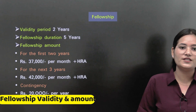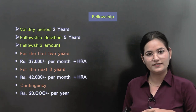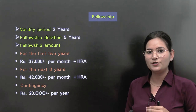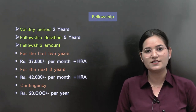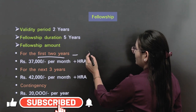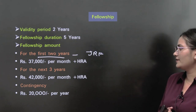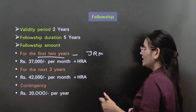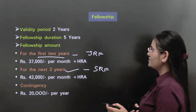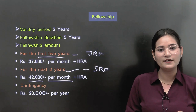Talking about fellowship: the validity period is 2 years. If you qualified the exam in 2023, you can activate your certificate any time up to 2025. The fellowship duration is 5 years if you are doing PhD from any institute or university in India. For the first 2 years, you are a JRF — Junior Research Fellow — receiving ₹37,000 per month plus HRA. For the next 3 years, you are promoted to SRF — Senior Research Fellow — with ₹42,000 per month plus HRA, along with a contingency of ₹20,000 per year.